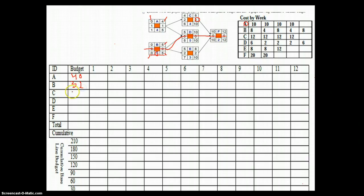And activity D the total budget is 18. And for activity E the total budget is 28. And for activity F the total budget is 40.